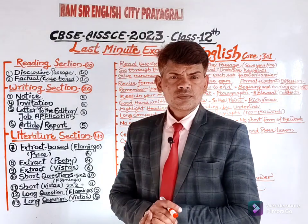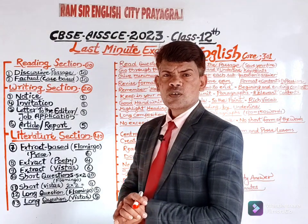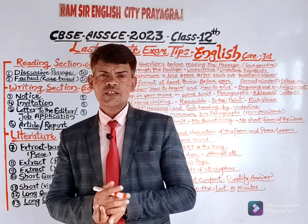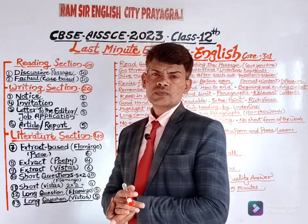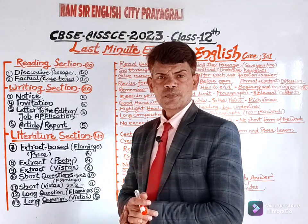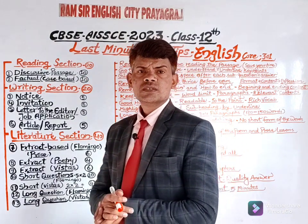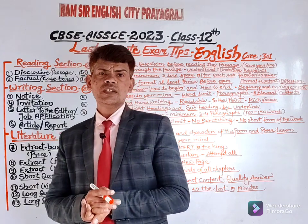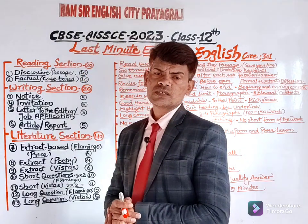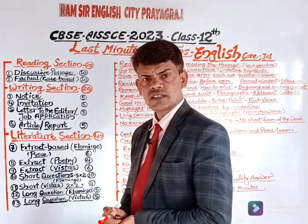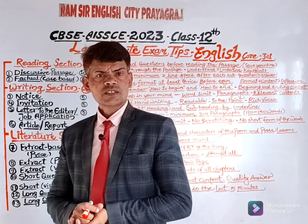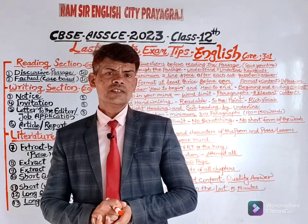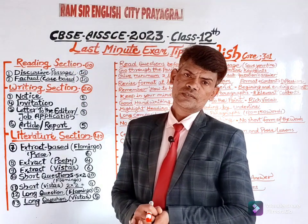As you know, your English paper — English score 301 — is divided into three sections: Section A, Reading; Section B, Writing; and Section C, Literature section.